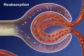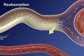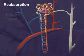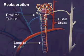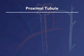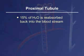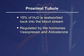In tubular reabsorption, substances are transported out of the tubules and back into the blood of the peritubular capillaries. Reabsorption takes place in the proximal tubule, loop of Henle, and distal tubule. The major part of reabsorption occurs in the proximal tubule. About 15% of water is reabsorbed back into the bloodstream. The process is regulated by the hormones vasopressin and aldosterone.